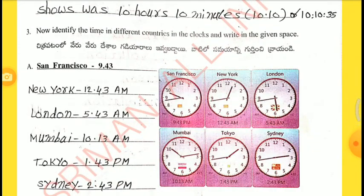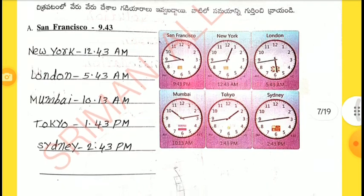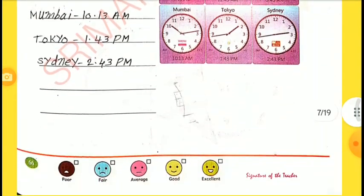Now identify the time in different countries in the clocks and write in the given space. Austin: 10 minutes. San Francisco: 9 hours 43 seconds. New York: 12 hours 43 seconds. London: 5 hours 43 seconds. Mumbai: 10 hours 13 seconds. Tokyo: 1 hour 43 seconds. Sydney: 2 hours 43 seconds.